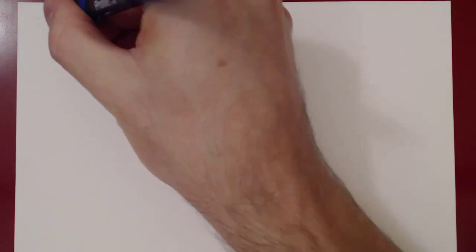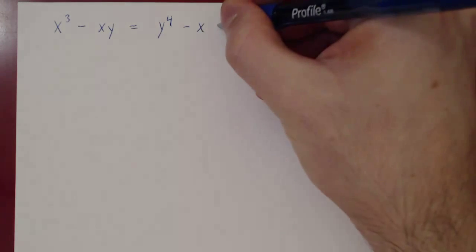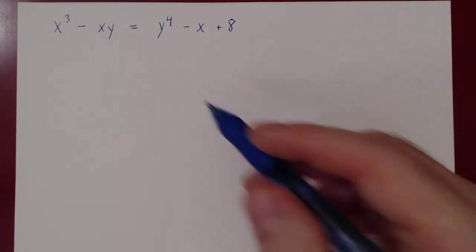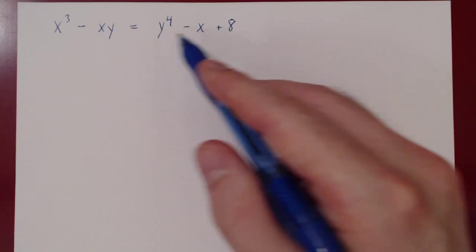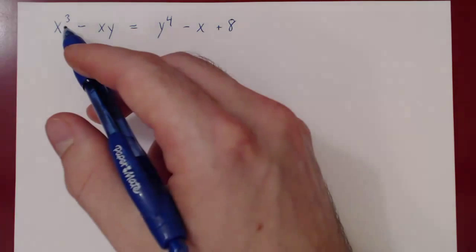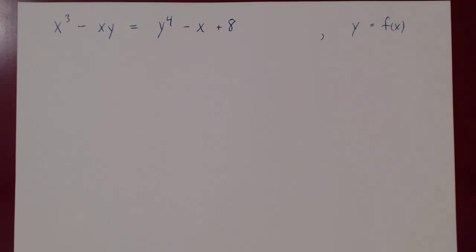In this video, we will consider a few more examples of implicit differentiation. We will not find the equation of a tangent line to the curve at a given point — we'll simply find the derivative of the curve. Suppose we have the following curve: x cubed minus xy equals y to the fourth power minus x plus 8. All pairs of x and y values that satisfy this equation will be a point on a curve. We think of x as the independent variable and y as an unknown function of x.